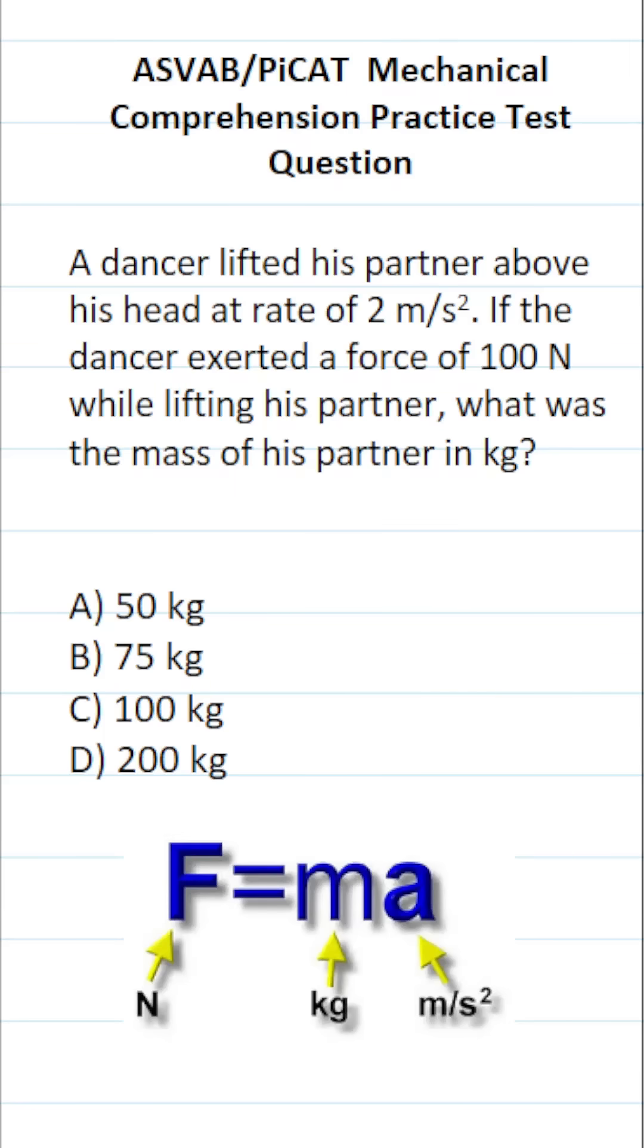This mechanical comprehension practice test question for the ASVAB and PiCAT says, a dancer lifted his partner above his head at a rate of 2 meters per second squared. If the dancer exerted a force of 100 newtons while lifting his partner, what was the mass of his partner in kilograms?